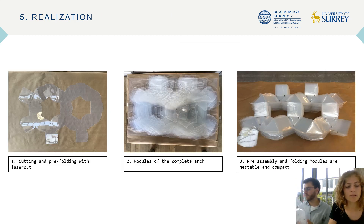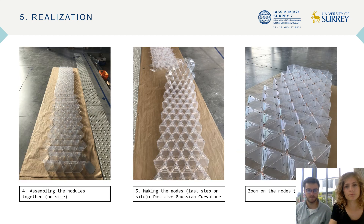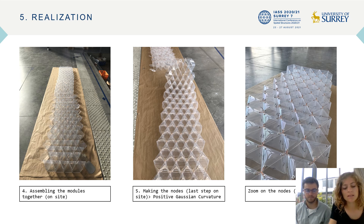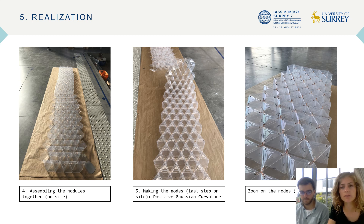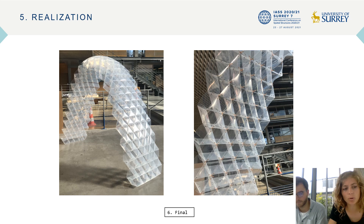The module is still efficient in terms of deployability, allowing compact transport and easy assembly on-site. For the realization, the module assembly is flat in the first step. Then we do the knot to create the curvature and realize the arch. Here we can see the picture of the final prototype in polypropylene.